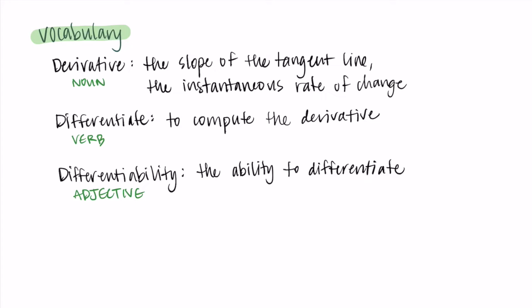We had a noun for derivative, a verb for differentiate, and differentiability is an adjective, a quality that something has. The last thing I want to highlight for this video is that the derivative is a function. If we start with f and f is a function, so is its derivative f prime.